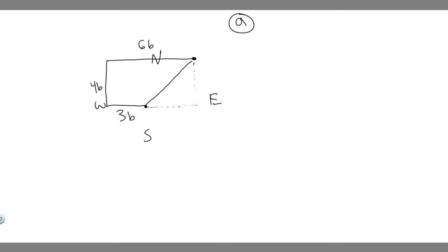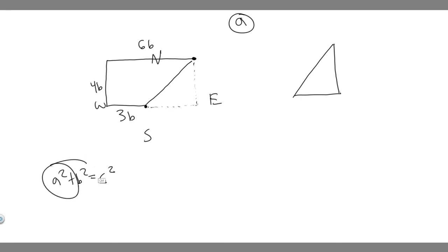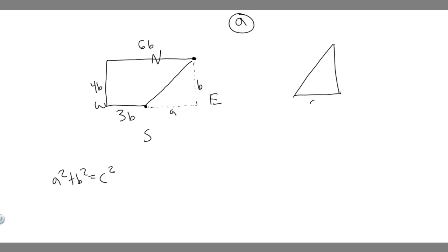I'm going to redraw this triangle right here. Do we know the lengths of these sides? We're trying to find this length right here. By the Pythagorean theorem — which is a² + b² = c² — if you have two sides of a triangle, you can solve for the other. So this is a, this is b, and this is c. We're trying to solve for c using this formula, but we need a and b first.